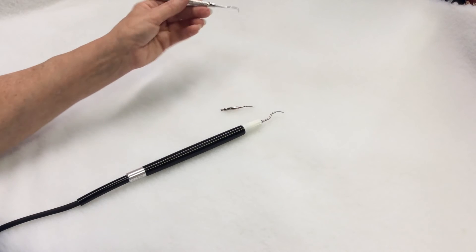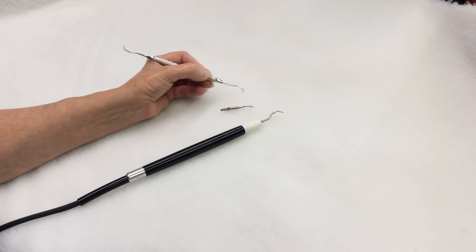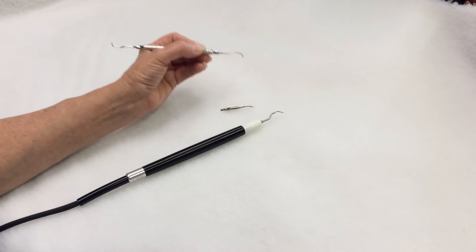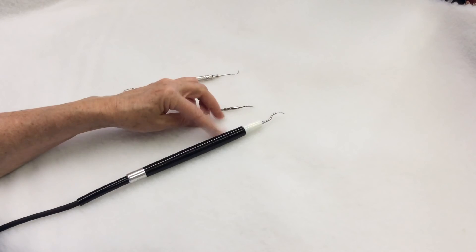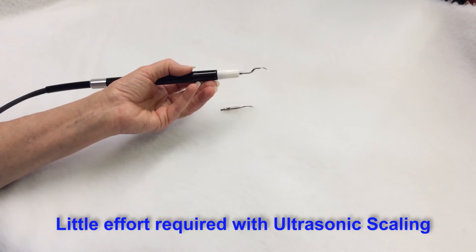When you use a regular manual hand scaler you need to apply pressure very close to the gum line as you scrape the tartar off. Not so with an ultrasonic scaling device. This is why it was invented, so you don't have to work too hard.